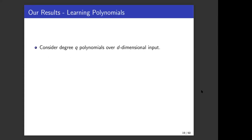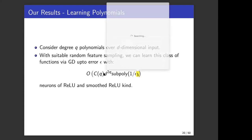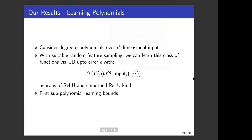An application of our representation result is about learning low degree polynomials. Consider degree q polynomials over d dimensional input. With suitable random feature sampling, we can learn this class of functions via gradient descent up to error epsilon, with complexity of d to the q sub poly of one over epsilon, with number of neurons which are of the relu and smooth relu kind. These are the first sub polynomial learning bounds.